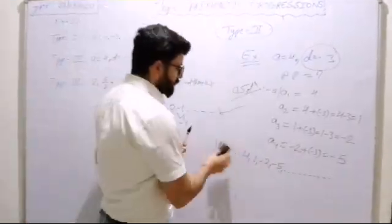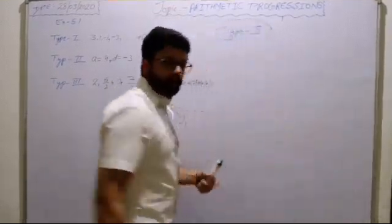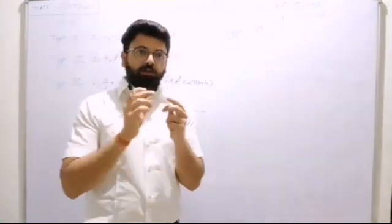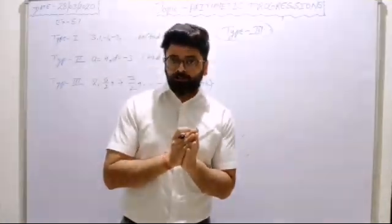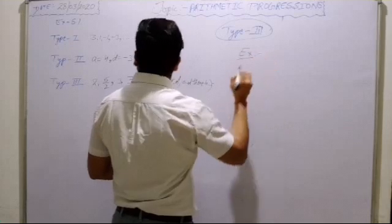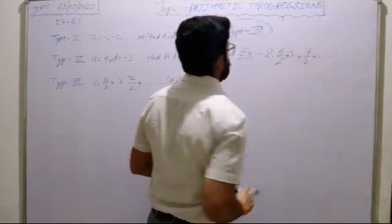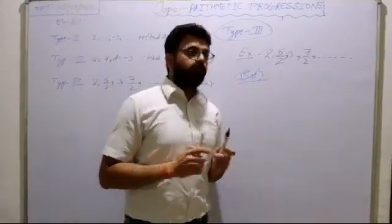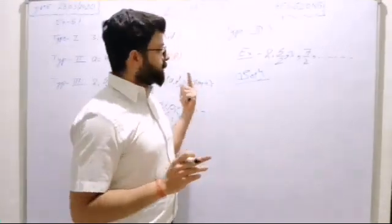Now, Type 3: In type 3, you will be given a sequence — an arrangement of numbers — and then you have to check whether it is an AP or not. If it is an AP, then you calculate more terms. So we will take out the common difference: if all differences are equal, then it is an AP; otherwise it is not.